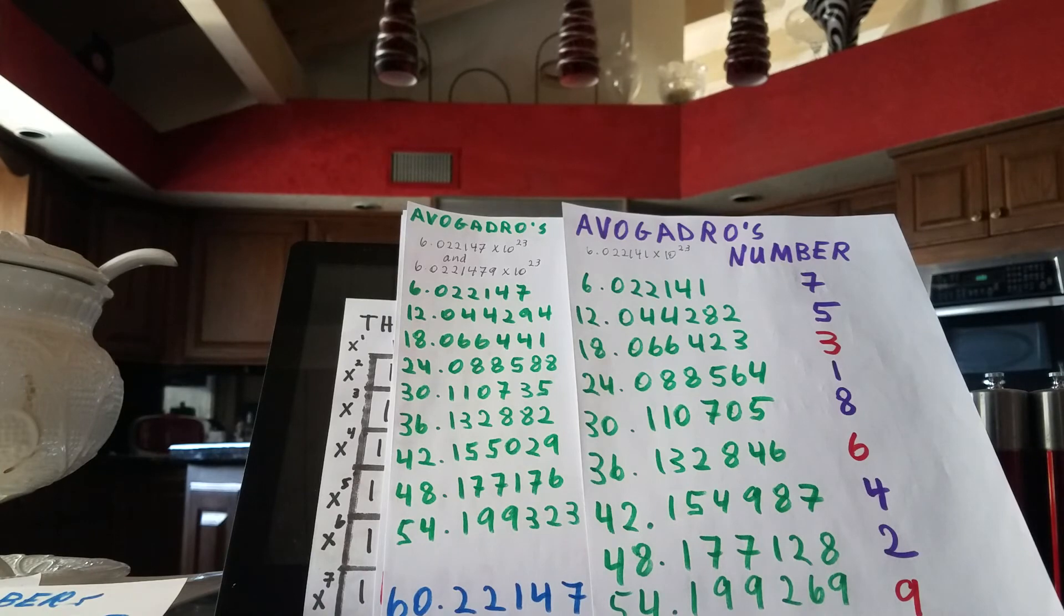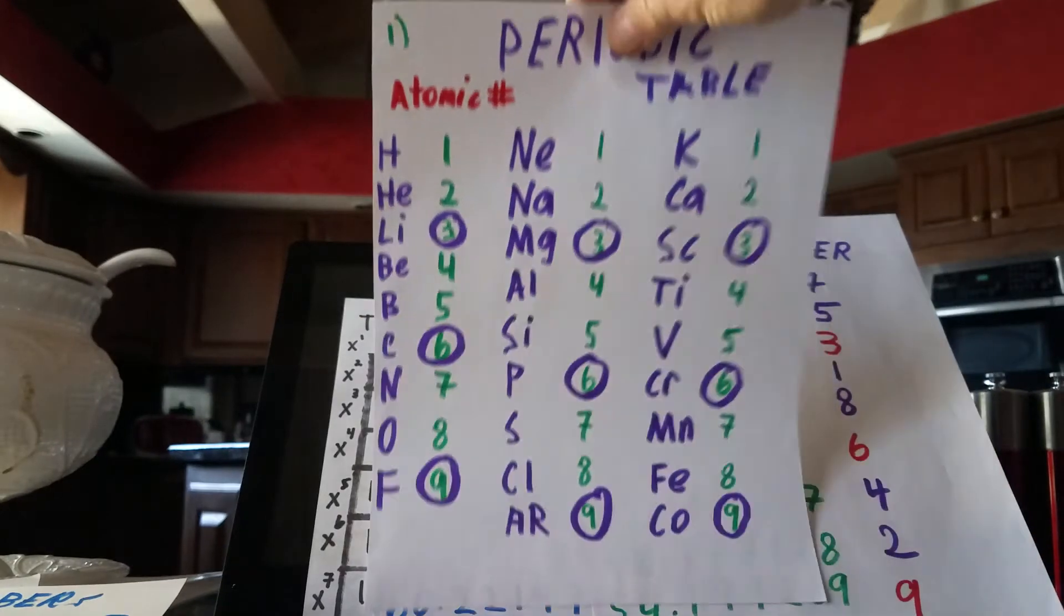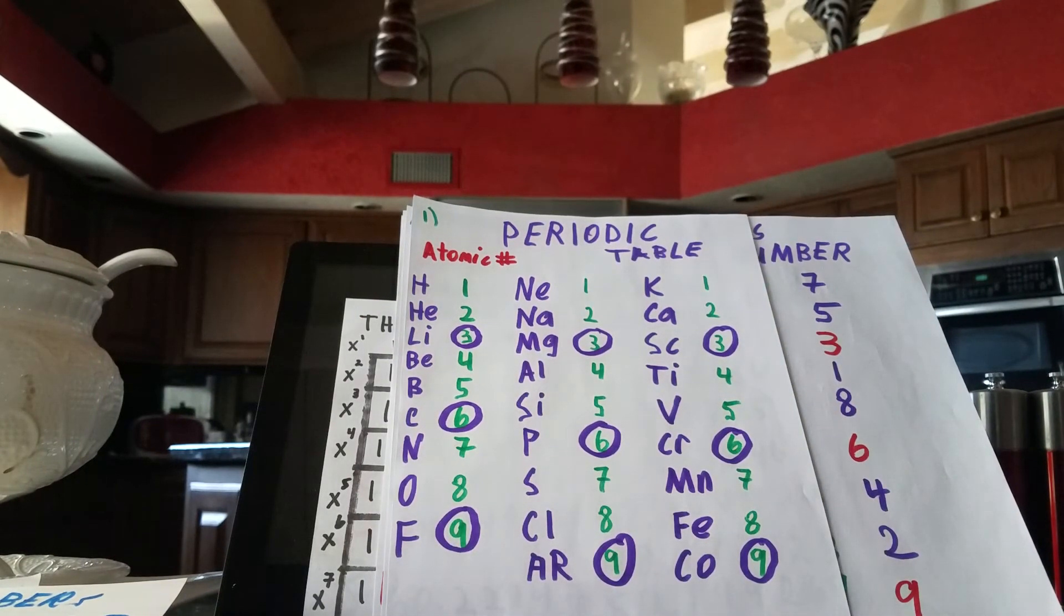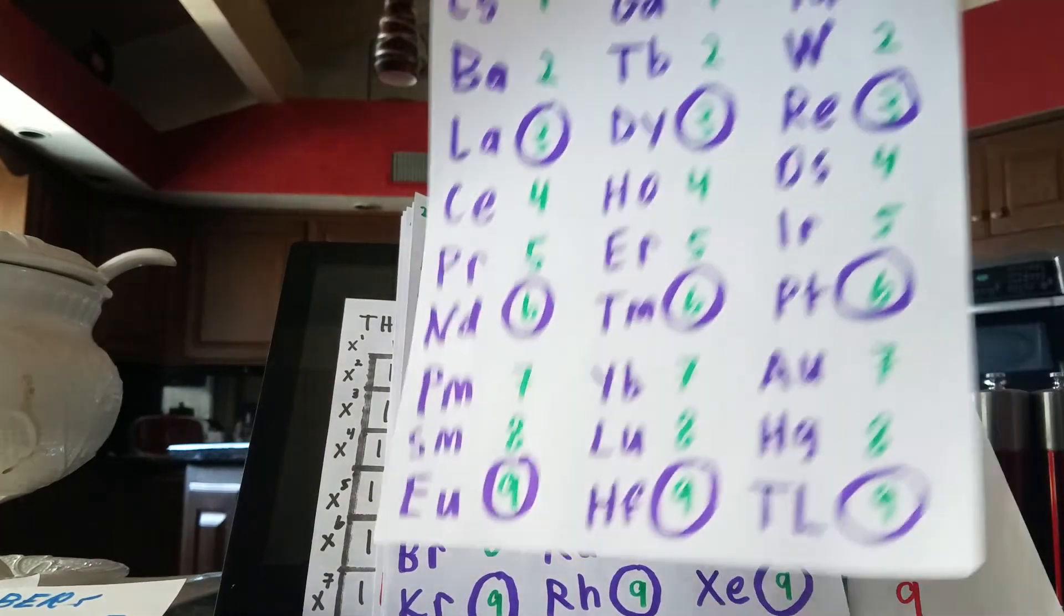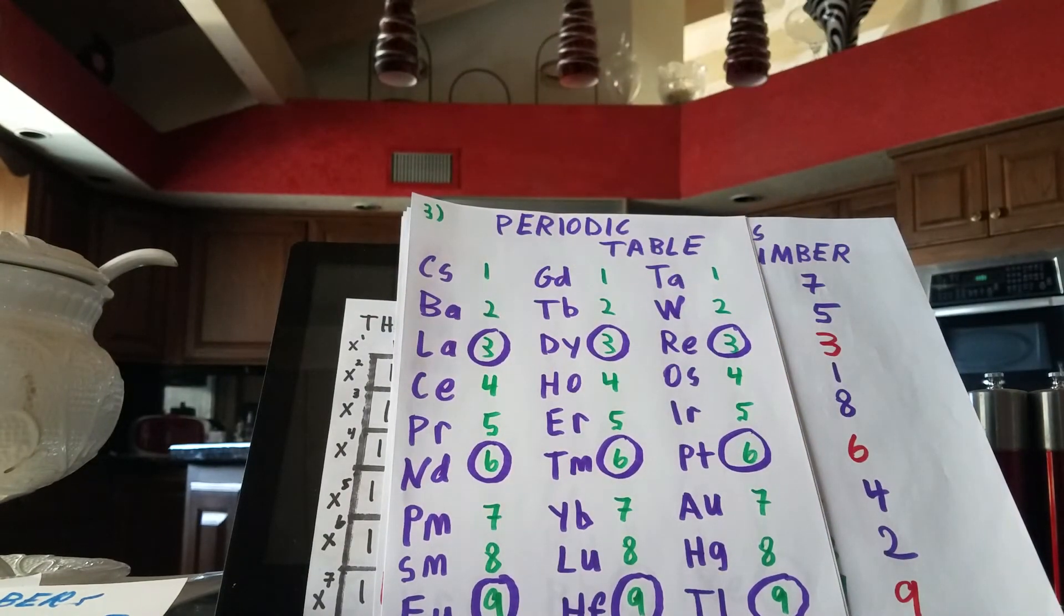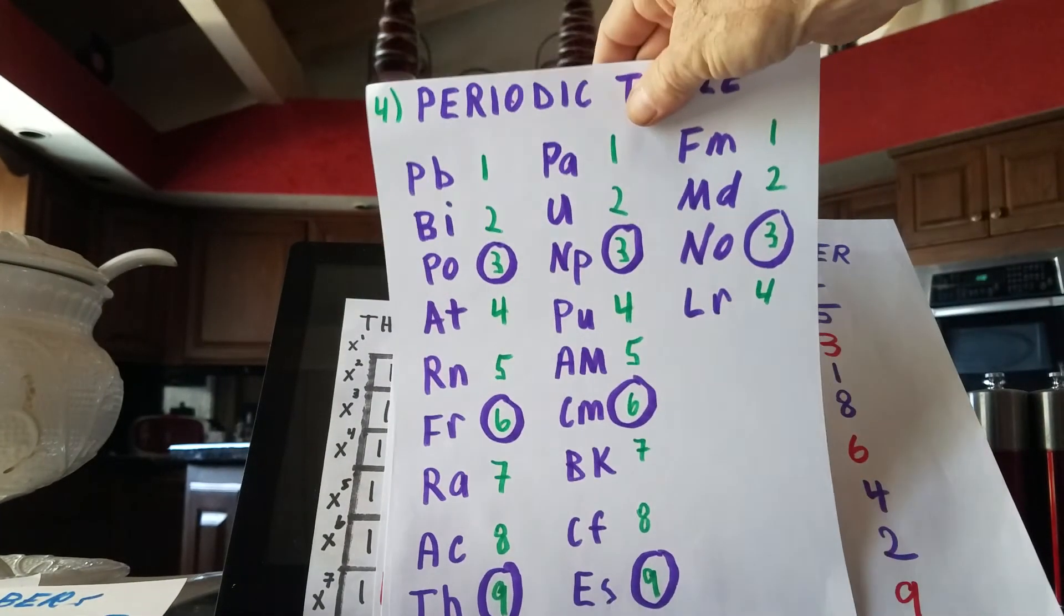What about the periodic table of elements that we use in chemistry? Well, that follows the 369 code as well. I'll put them in order and illustrate that for you today. We have the periodic table of elements, and we add up the number of protons in each element. It gives us an atomic number, and it goes from 1 to 104 I think now. It's following the 369 code as well. That may be an oversimplification, but I think there's something more deep you can understand about it. That's why I try to point things out like that.